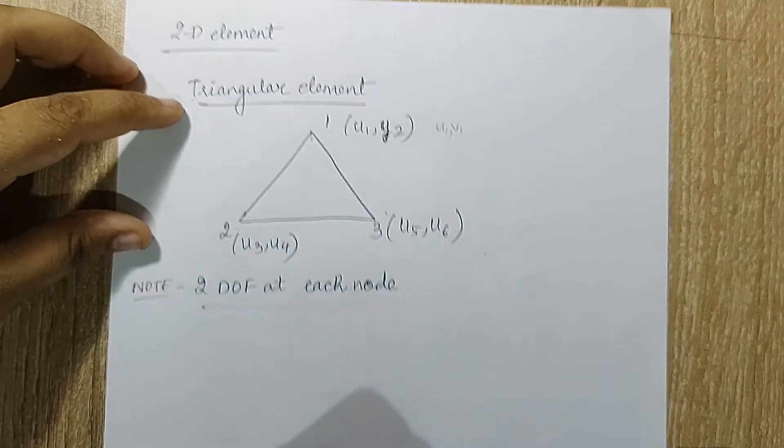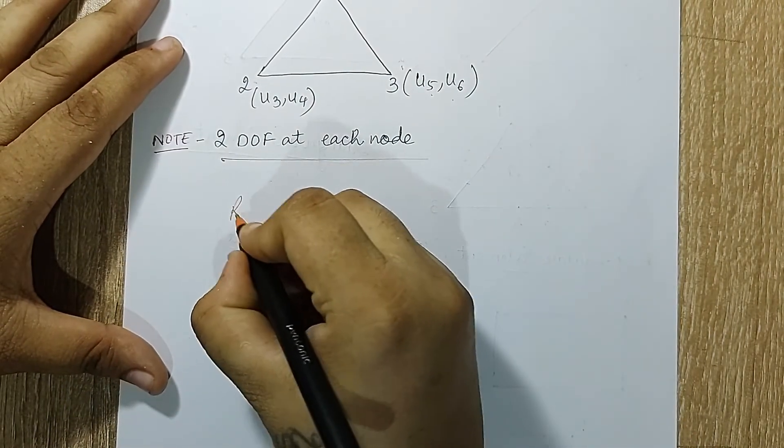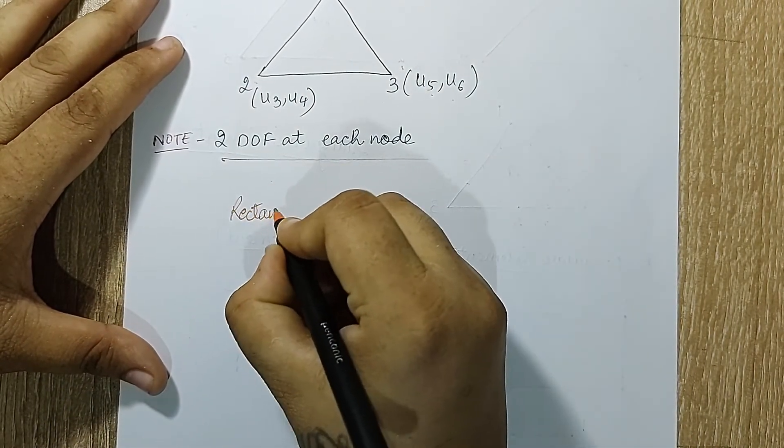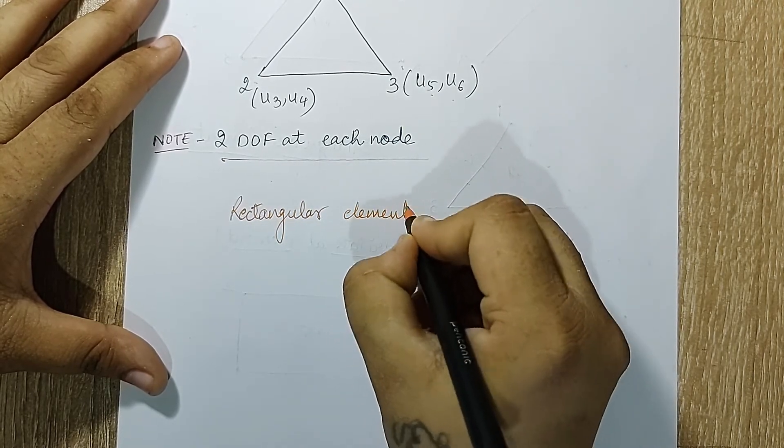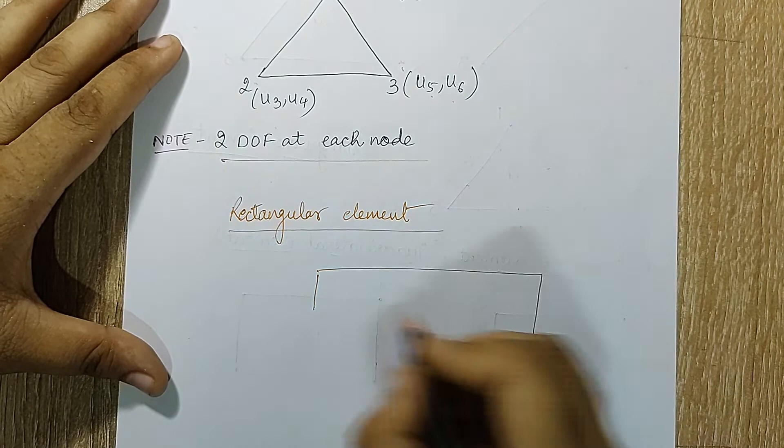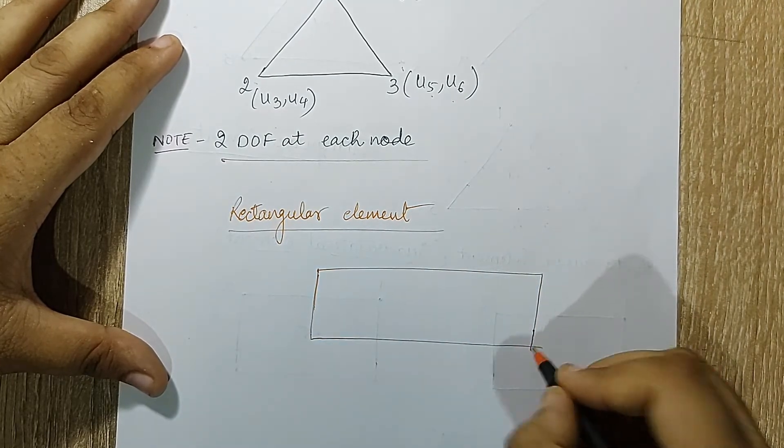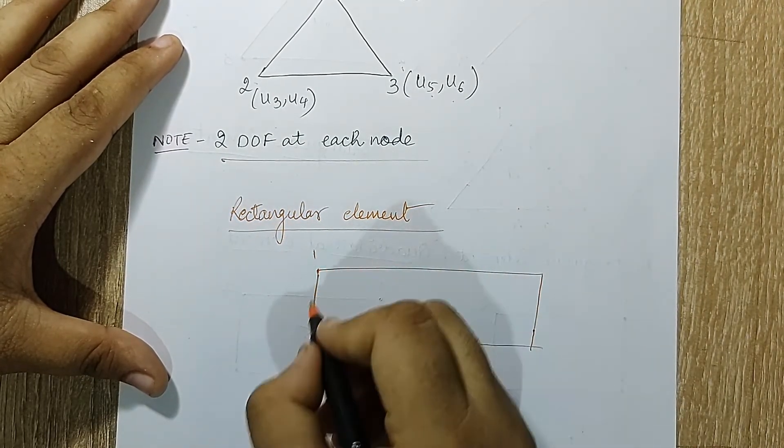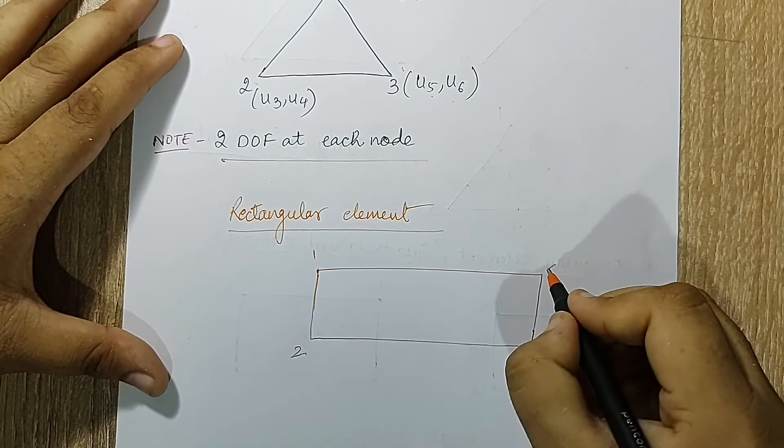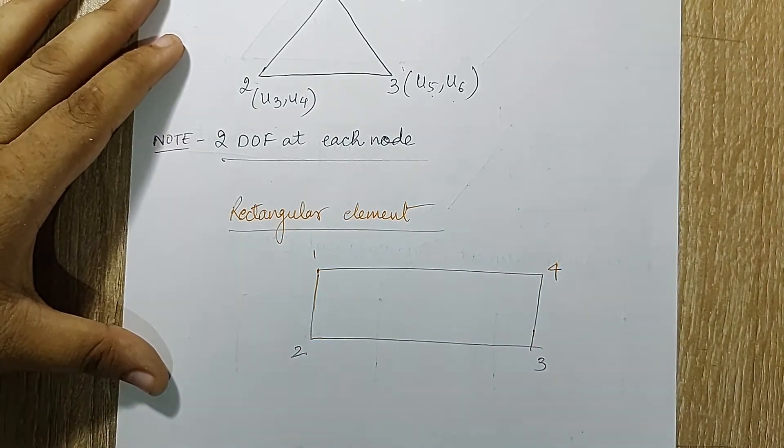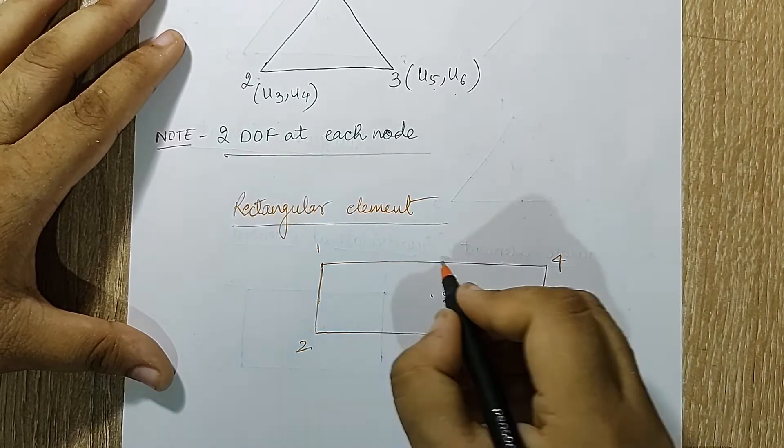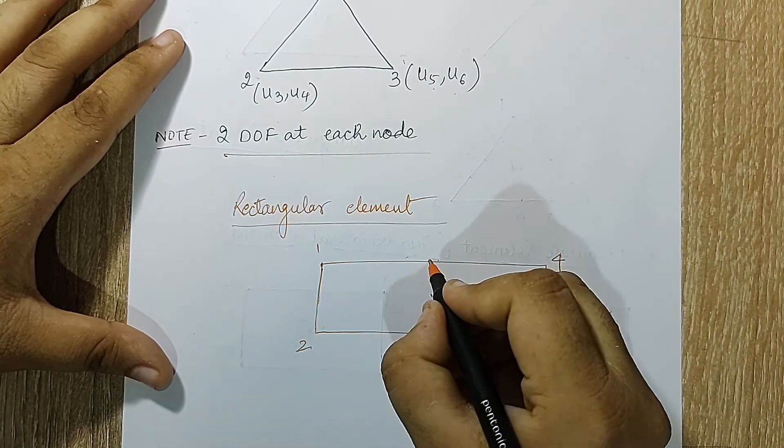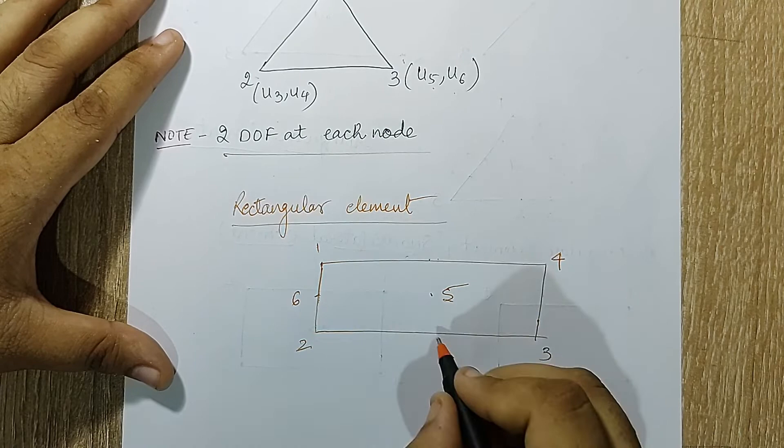I've written here two degrees of freedom at each node. Now let's talk about a rectangular element. When I talk about a rectangular element, again marking in a particular order is very important. Let me say that this is my element. Let me mark one, two, three, four, something different from the previous one. I can also have a node five here. I can have more nodes, six, seven, eight, nine. You can have more.